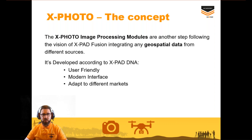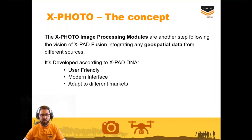Less than one year ago we launched the XPhoto module, which allows processing images from different cameras and integrating data from aerial and terrestrial photogrammetry. All this data can be integrated in the Expert Office Fusion platform. In keeping with the platform's DNA, this module is user-friendly with a modern interface, adapted to different markets, and easy to use — I'll show you how to process images step by step.